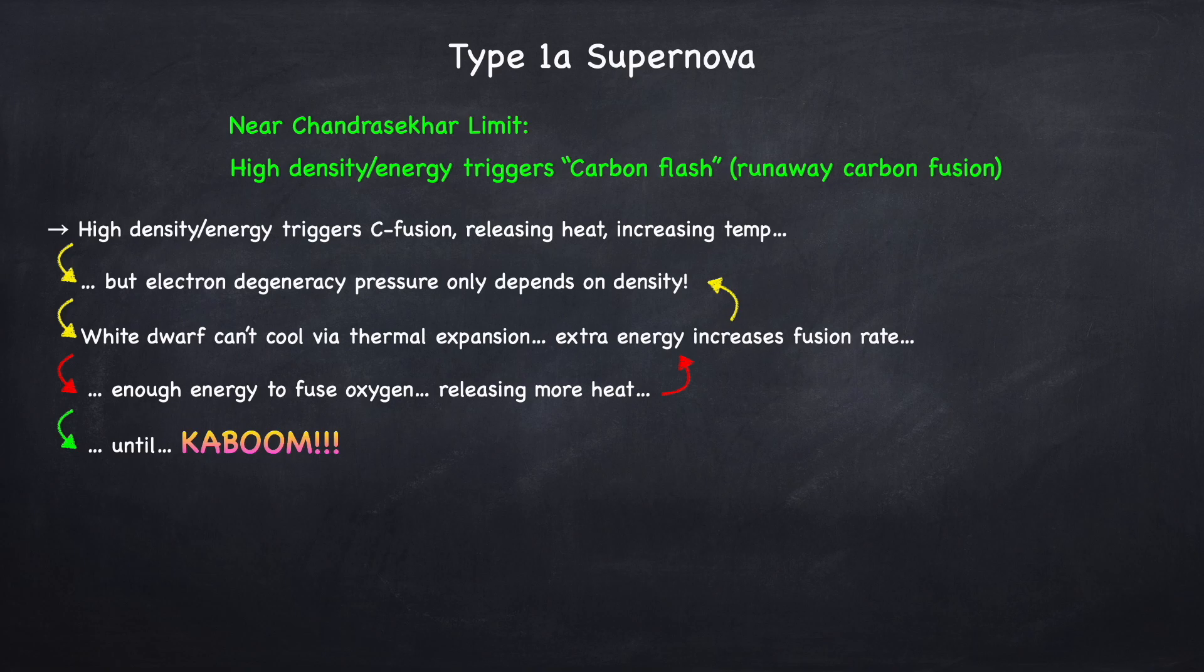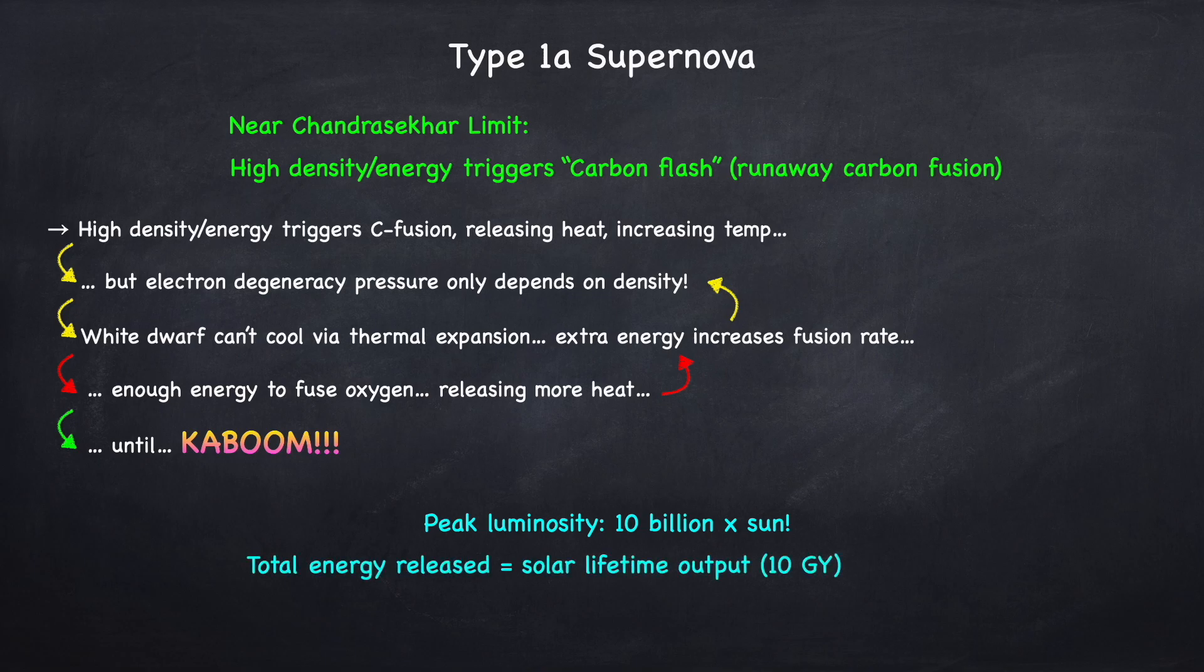So this explosion, which is the type 1a supernova, releases an enormous amount of energy. Its peak luminosity is 10 billion times as bright as the sun. The total energy released in a type 1a supernova is about equal to all the energy released by the sun in its entire lifetime, which is 10 billion years. But in the case of this supernova, this energy is released in a period of about a month. So this is a massive explosion. A type 1a supernova is one of the brightest things in the universe, and this explosion just obliterates the white dwarf.